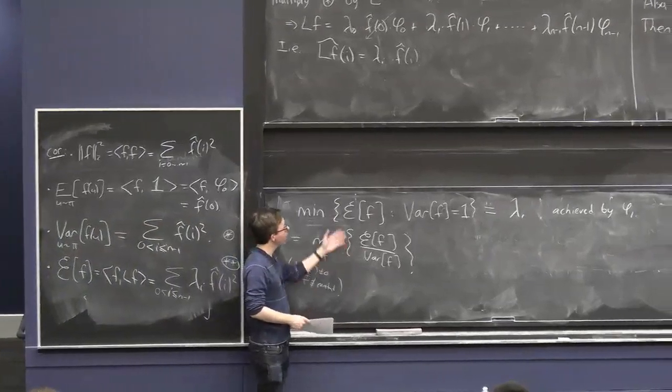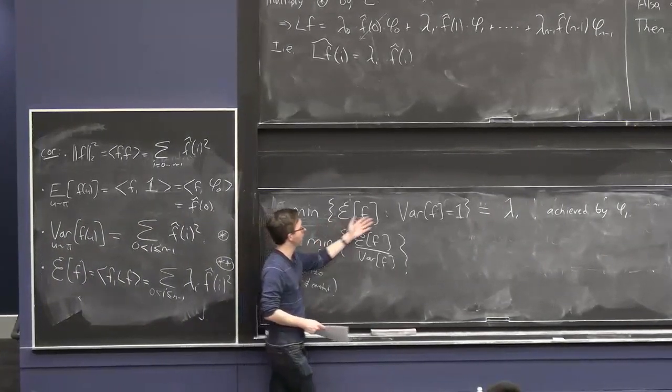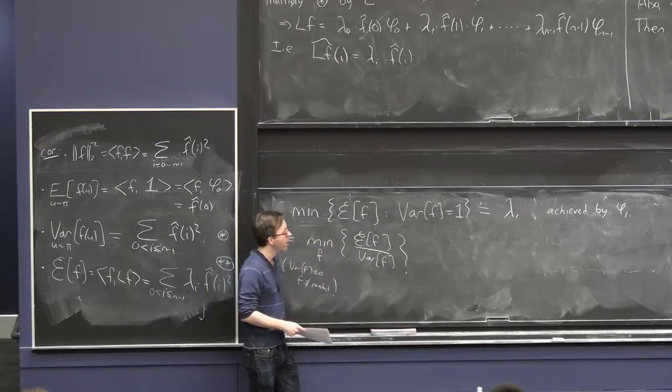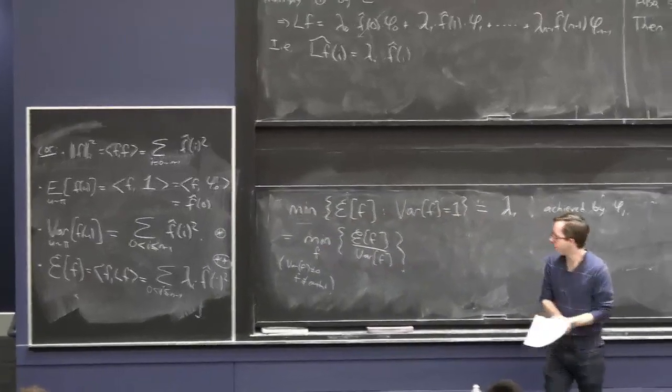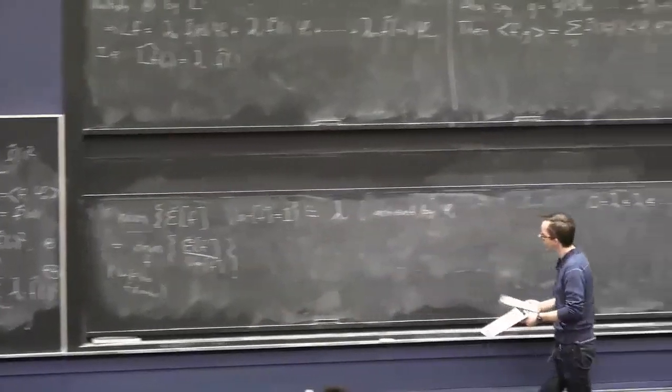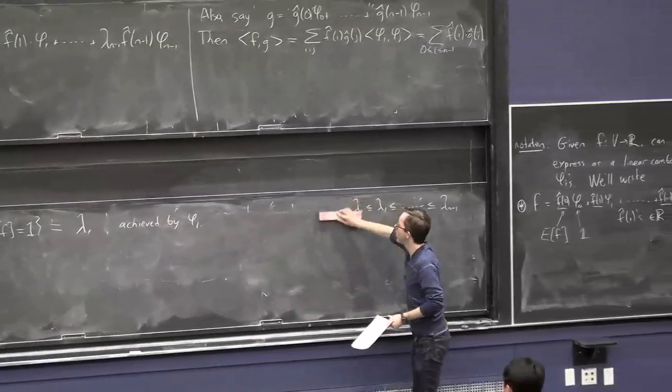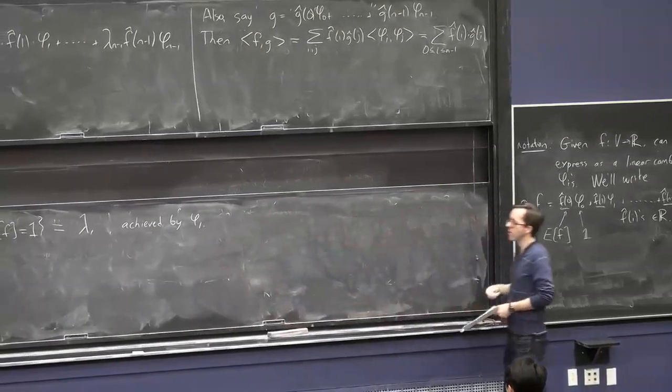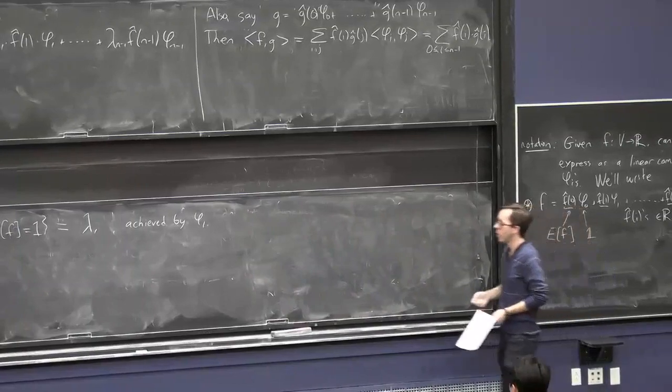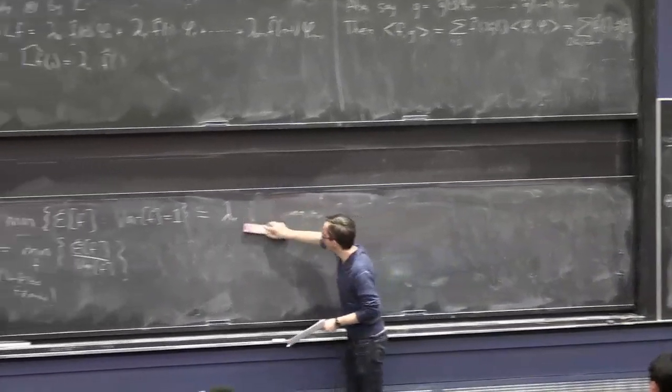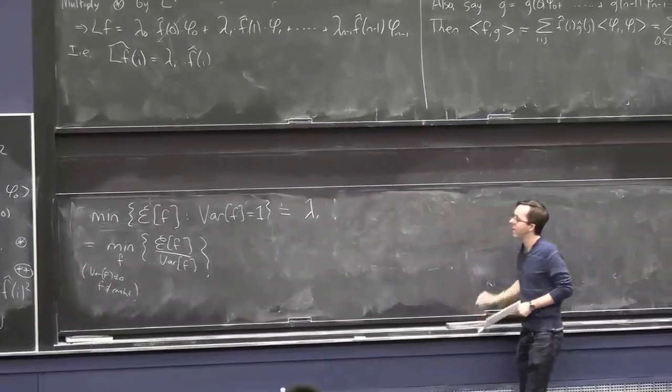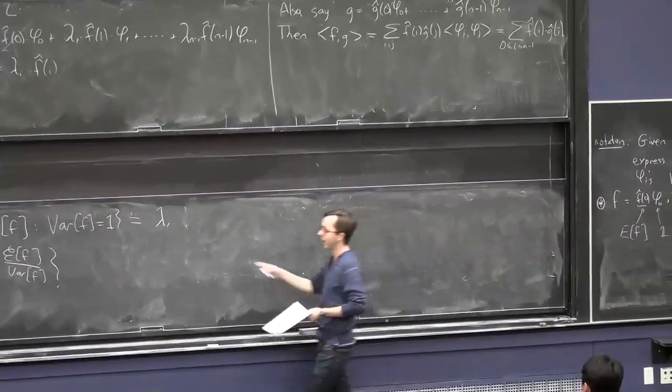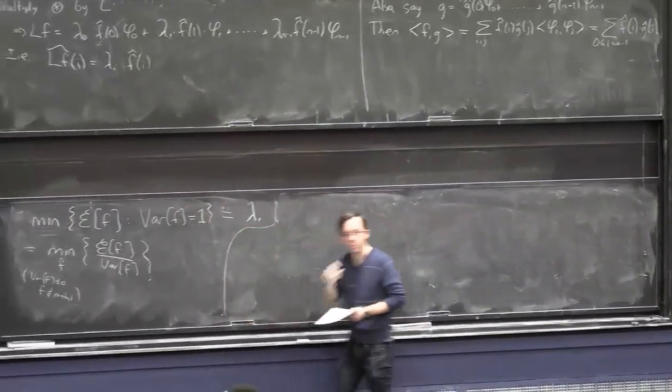Great. So, this is kind of good. If you happen to be interested in this program of minimizing this subject to this or minimizing this ratio, the answer is very easy. Answer, lambda 1. Done. But what we're really interested in, as I'll remind you in this sort of sparseness cut problem, is this minimization problem, but restricted to functions f, take on the value of 0,1. And that actually turns this into an NP-hard problem, which is a shame.